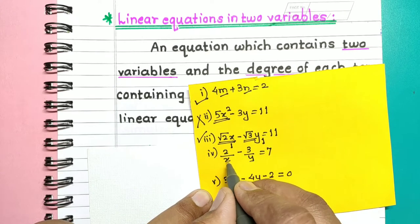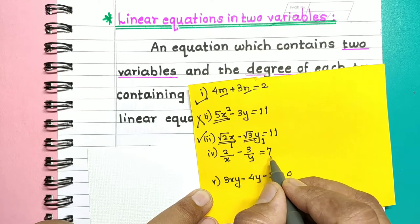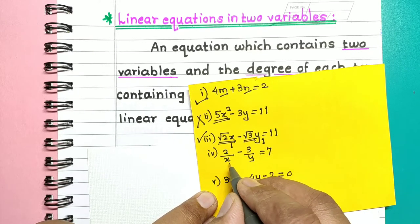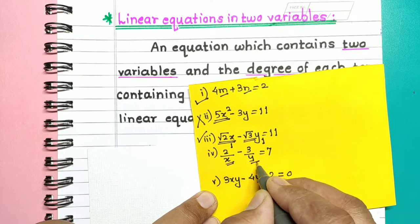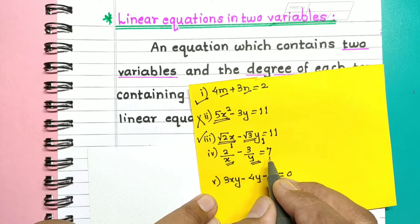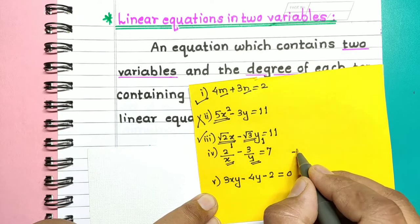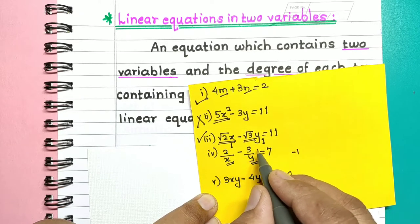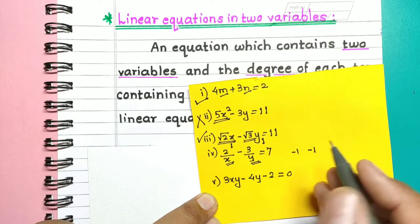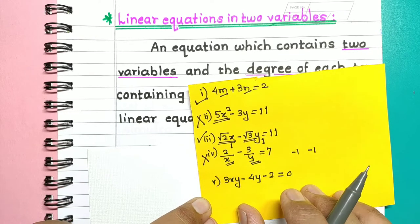Now consider 2 divided by x minus 3 divided by y is equal to 7. Here, although there are two variables x and y, they are in the denominator. The degree of the term 2/x is minus 1 and the degree of 3/y is also minus 1, so this is not a linear equation.